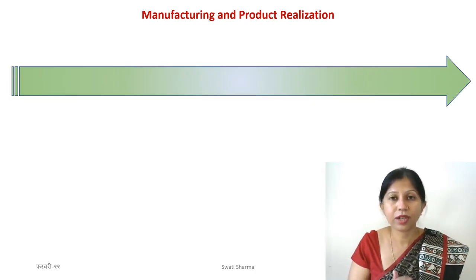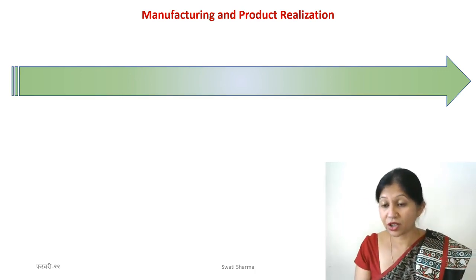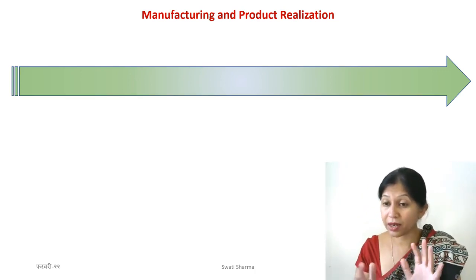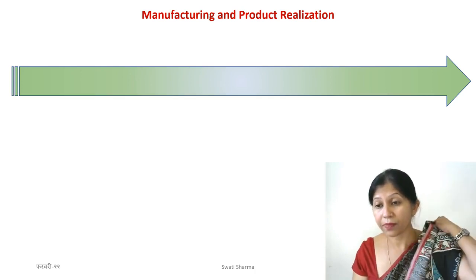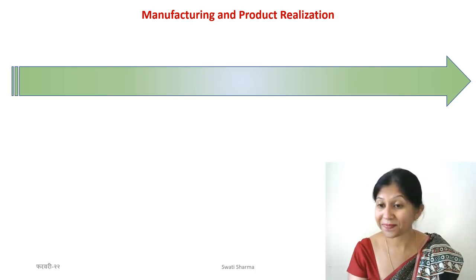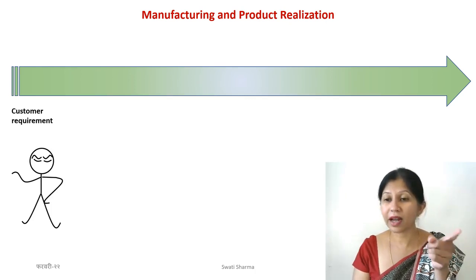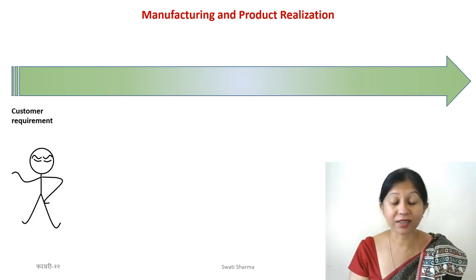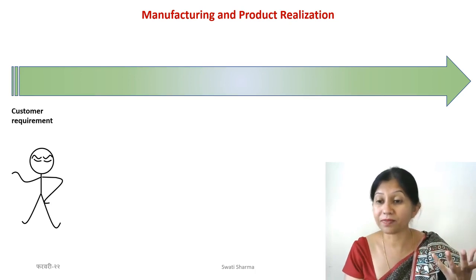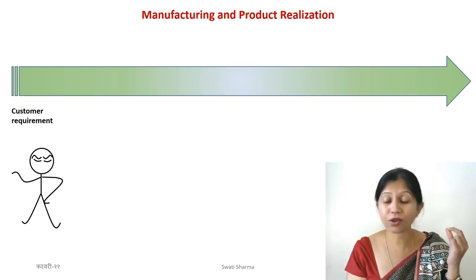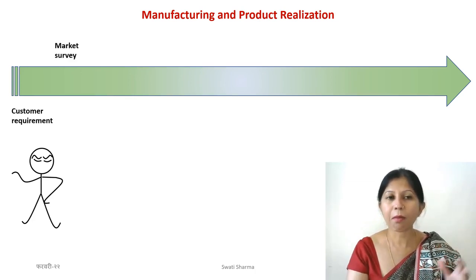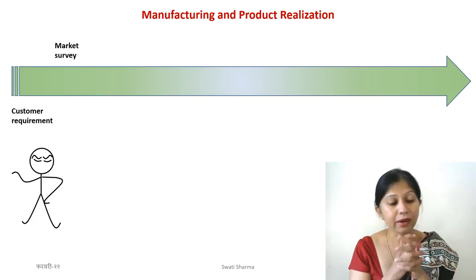The last topic for today is product realization and how it connects to manufacturing. Manufacturing is about making something using different materials and processes. But product realization asks: what are all the steps involved in making a product? A product is something a customer needs, and the very first step is understanding the requirement of the customer.